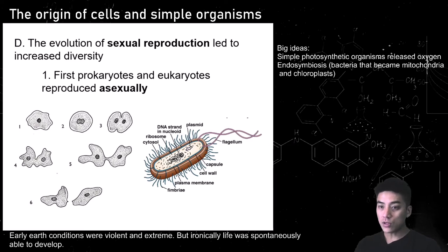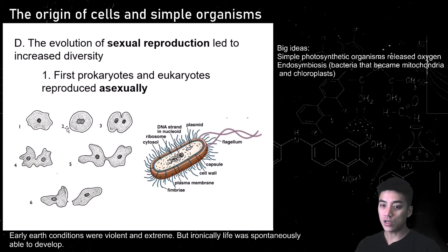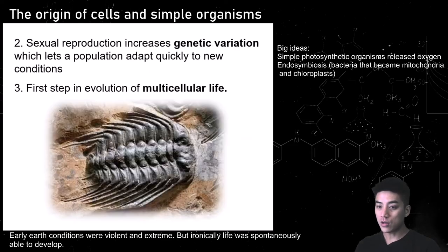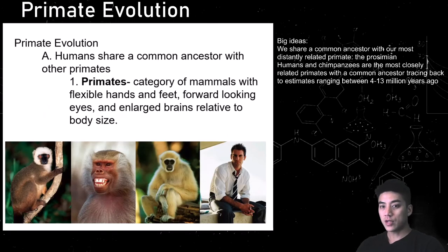You also have the evolution of sexual reproduction. At first, prokaryotes and eukaryotes only reproduced asexually — budding off and creating clones of themselves, almost like mitosis. But with more advanced sexual reproduction, you have more diversity, more genes, and evolution can occur that way.